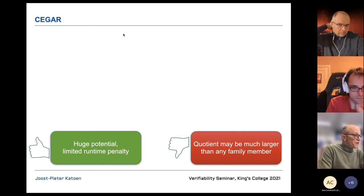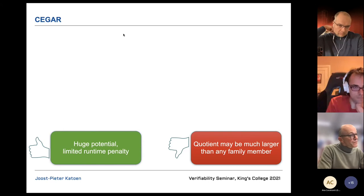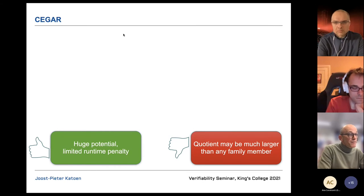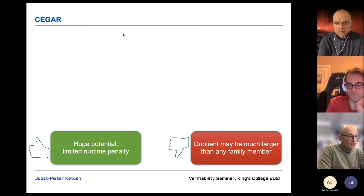This CEGAR approach has huge potential, though it has drawbacks — the quotient itself may be much larger than any individual family member. It works well for some examples, as I will show.